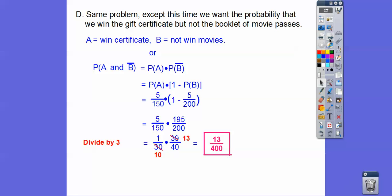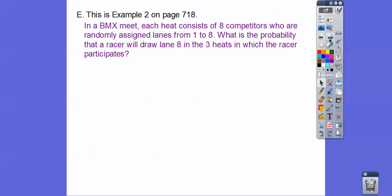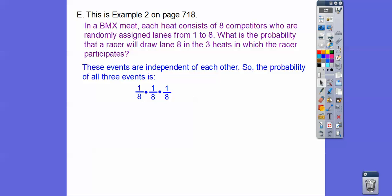Here's the example on page 718. In a BMX meet, each heat consists of 8 competitors randomly assigned lanes 1 through 8. What's the probability that a racer will draw lane 8 in all 3 heats? Each race is independent of the others, so the probability is one eighth times one eighth times one eighth, which gives us 1 over 512.